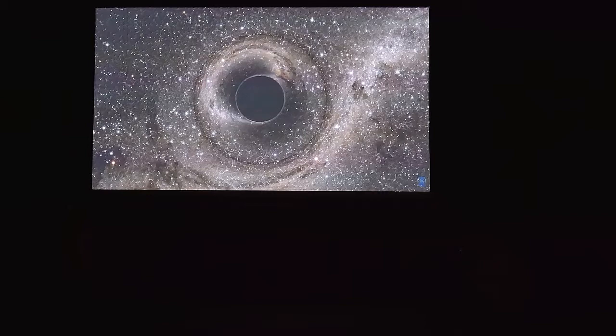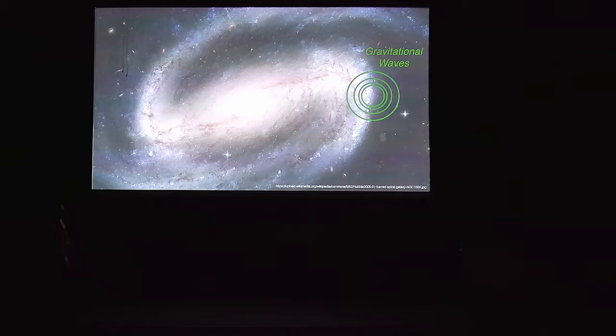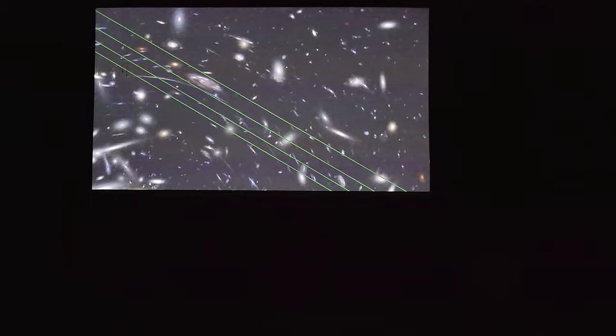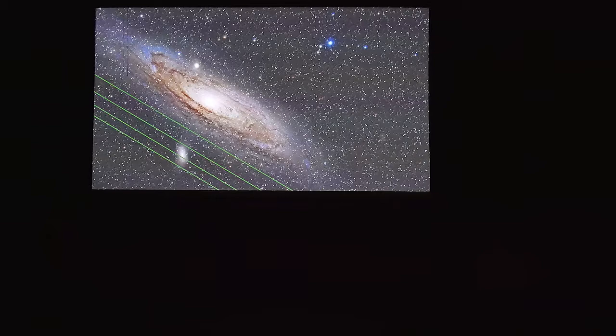These gravitational waves traveled out of the galaxy in which those two black holes lived, into the great reaches of intergalactic space, across intergalactic space for 1.3 billion years, until about 50,000 years ago when our ancestors were sharing the Earth with the Neanderthals. These gravitational waves arrived at the outer edges of our Milky Way galaxy, then traveled into the Milky Way galaxy, and reached the Earth on 14 September 2015.